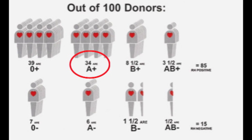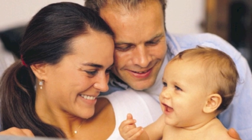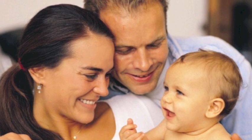Type A positive and O positive are the most common types of blood in the United States, making up approximately 72% of the population. AB negative is the rarest blood type in the United States, making up only 1% of the population. An individual's blood type is inherited from both parents.